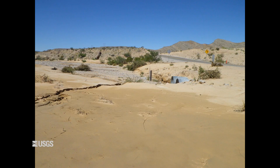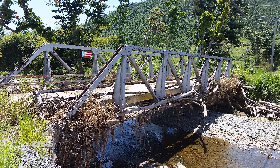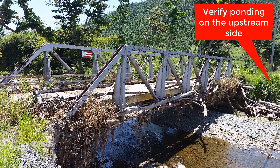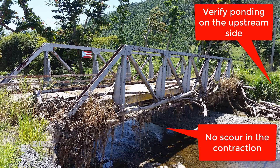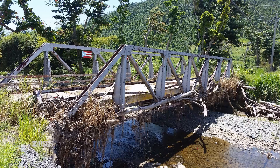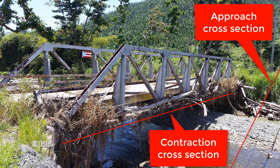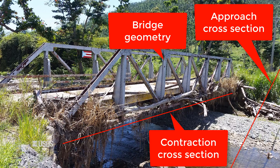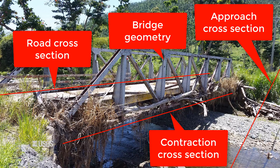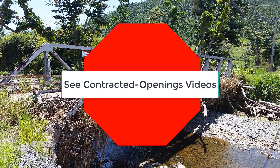We've been talking about doing a multiple component indirect measurement using a culvert and a road overflow, but you could also use a contracted opening and a road overflow. Keep in mind that you still want to verify ponding on the upstream side and make sure you didn't have scour going through the contraction. Otherwise, the procedures will be similar. You will have four major items to survey: 1) an approach cross section; 2) a cross section in the contracted section at the point of maximum contraction; 3) bridge geometry and details regarding the opening; and 4) a cross section on the crest of the road. Don't forget to survey high water marks both upstream and downstream of the structure. Contracted openings are described in detail in the contracted openings computation videos.